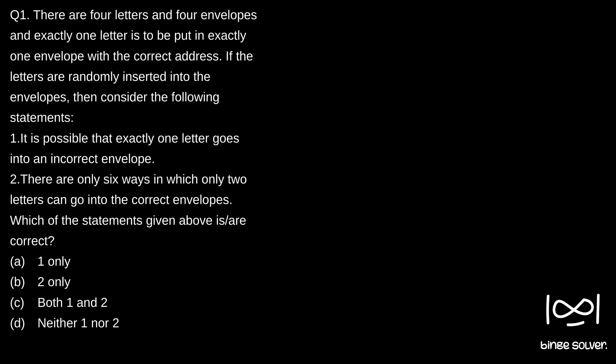Question number one. There are four letters and four envelopes, and exactly one letter is to be put in exactly one envelope with the correct address. If the letters are randomly inserted into the envelopes, then consider the following statements. Statement one: it is possible that exactly one letter goes into an incorrect envelope. Statement two: there are only six ways in which only two letters can go into the correct envelopes.